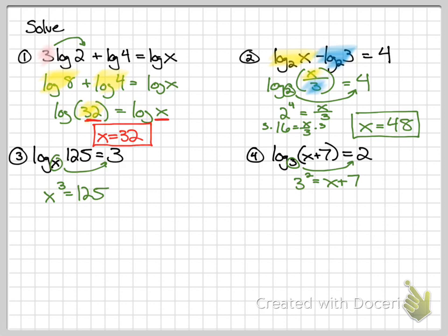So far all I've done is changed them all to exponent problems. x cubed equals 125. That's one of the powers you're supposed to have memorized. 5 cubed equals 125. So x equals 5. On number 4, 3 squared equals x plus 7. So 9 equals x plus 7. Minus the 7, x must equal 2.